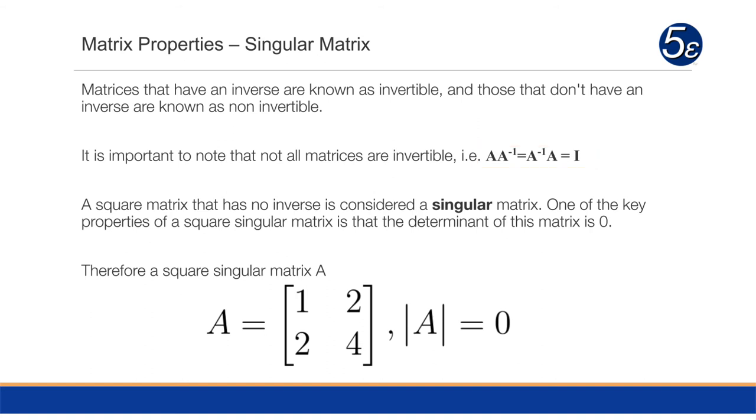A square matrix that has no inverse is considered a singular matrix. One of the key properties of a square singular matrix is that the determinant of this matrix is 0. For the purposes of this discussion, a square matrix is singular if its determinant is 0.